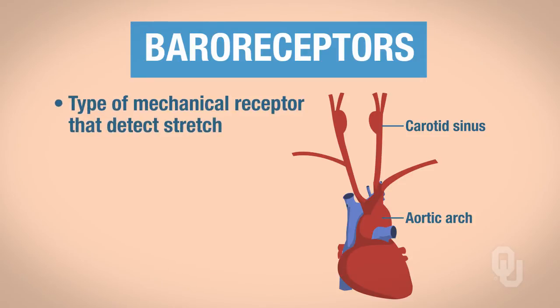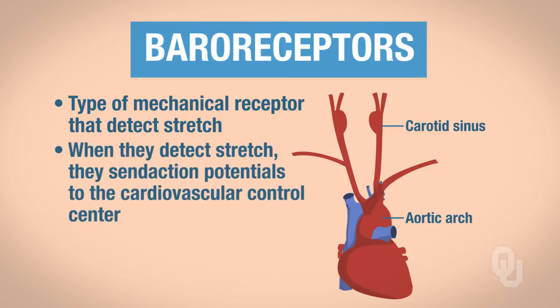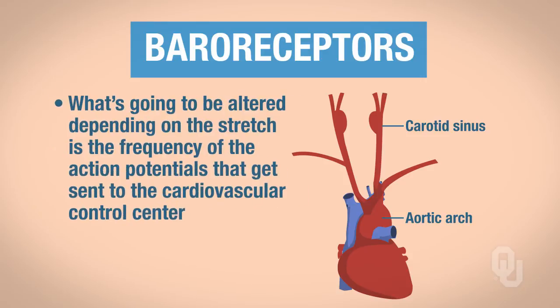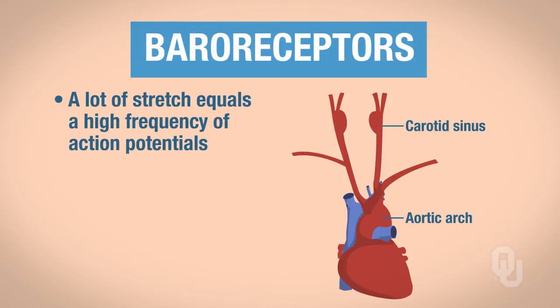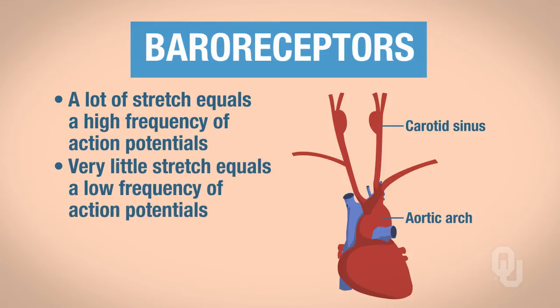These are stretch receptors — a type of mechanical receptor that detects stretch. When they detect stretch, they send action potentials to the cardiovascular control center. What gets altered depending upon the stretch is the frequency of those action potentials. A lot of stretch produces a high frequency; very little stretch produces a low frequency of action potentials.